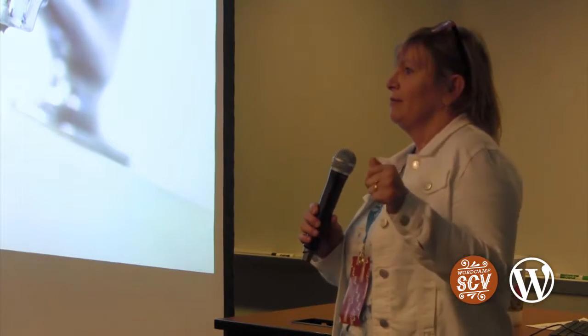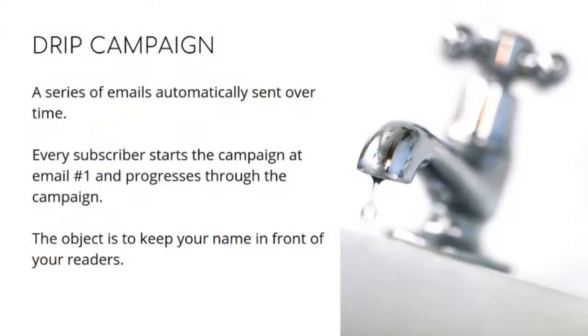So, who knows what a Drip campaign is? It's a series of automated emails sent over a period of time. Every subscriber starts at email number one, no matter when they subscribe. If somebody subscribes in January, they get email number one. If somebody subscribes in August, they get email number one. And then they go through the series. The object of a Drip campaign is to keep your name in front of the readers for name and brand recognition.